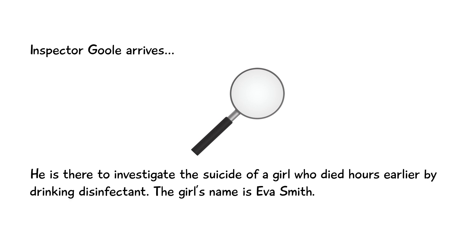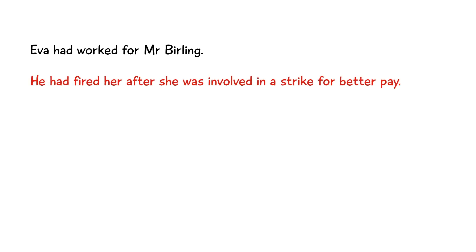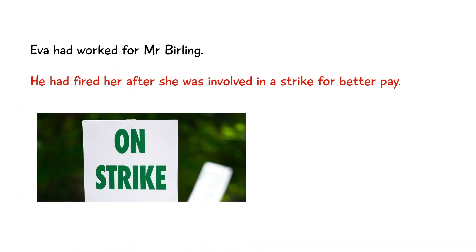This moment marks Inspector Goole's arrival. The Inspector introduces himself to Mr Birling, who is actually quite surprised at the fact that he doesn't recognise the Inspector, because he prides himself on knowing the Brumley police force fairly well. The Inspector explains that he is there to investigate the suicide of a girl who died two hours earlier in the infirmary by drinking disinfectant. The girl is Eva Smith, and the Inspector shows a photograph to Mr Birling, but to nobody else. It's revealed that Eva had worked for Mr Birling a couple of years earlier and that he had fired her after she had helped to lead a strike demanding better pay for the workers. The Inspector explains that this moment began the chain of events which ultimately led Eva to her death, although Mr Birling refuses to believe that he is in any way responsible.